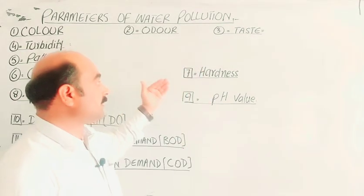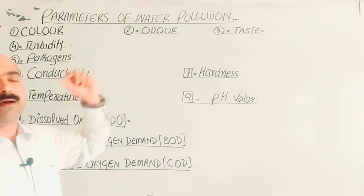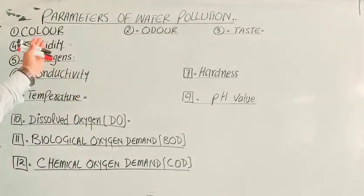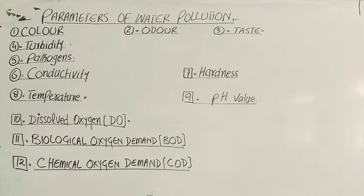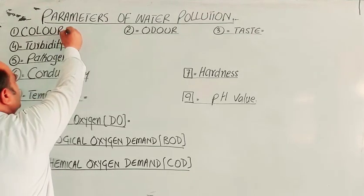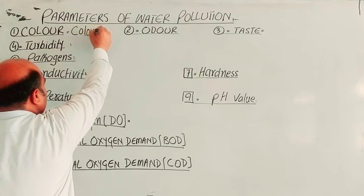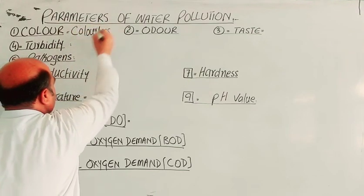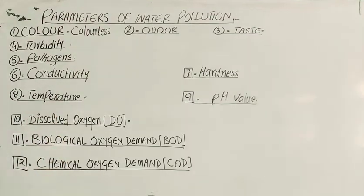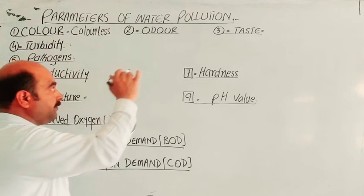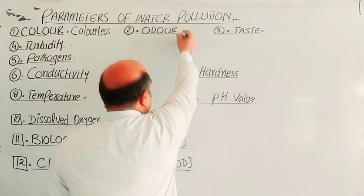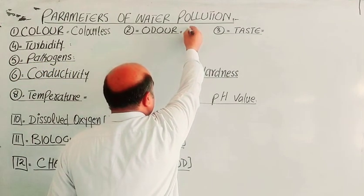Now I am going to write the parameters on the board — students, please take a screenshot. Topic: Parameters of Water Pollution. First parameter: Color — pure water must be colorless. Second: Odor — it must be odorless.